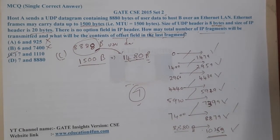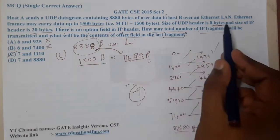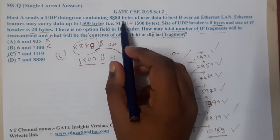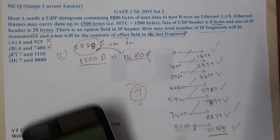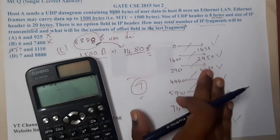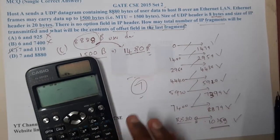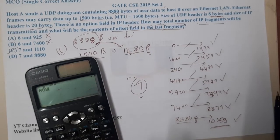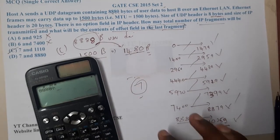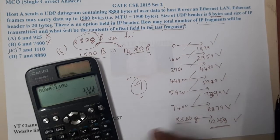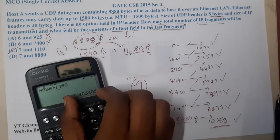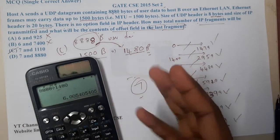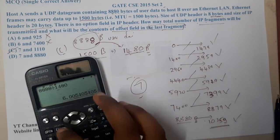If the data size were very large, the step-by-step method would be slow. The shortcut: divide total data (8888) by bytes per fragment (1480). You get approximately 6.00005. Since 6 packets are not enough — the remaining 0.00005 fraction still needs sending — you must take 7 packets. This immediately eliminates the first two options.